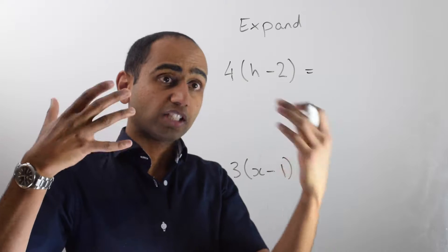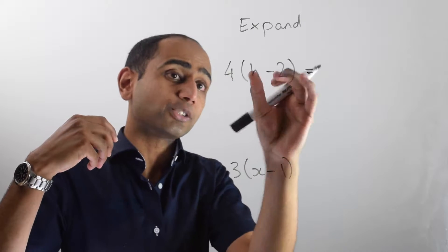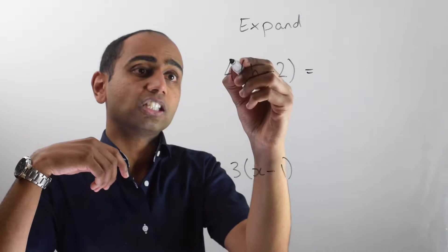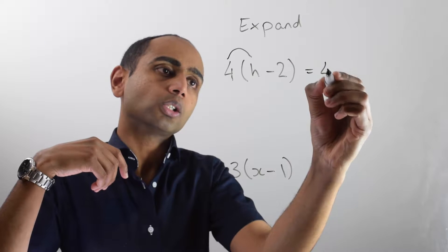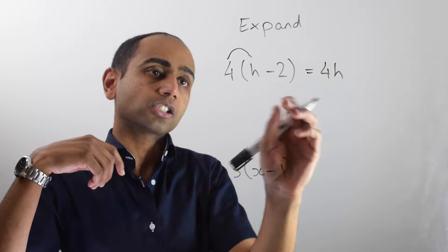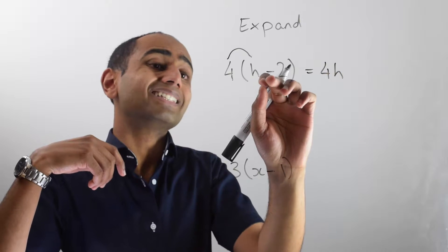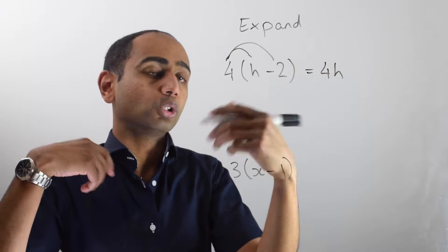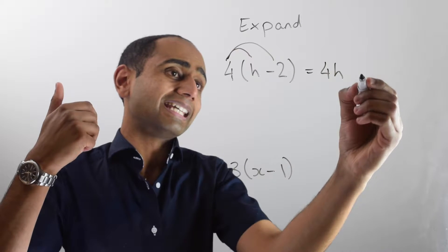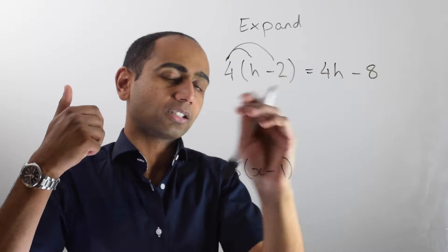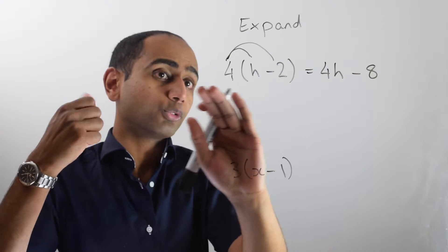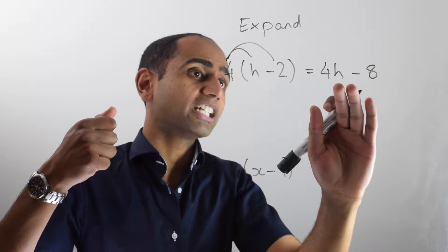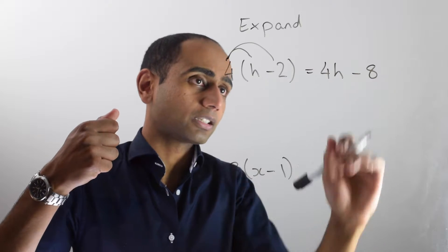In this first example, I've got four lots of h minus two. So that's going to give me four lots of h, which is four h, and I'm going to want to take away four lots of two. Four lots of two is eight, so I'm going to subtract eight. So four lots of h minus two equals four h minus eight.